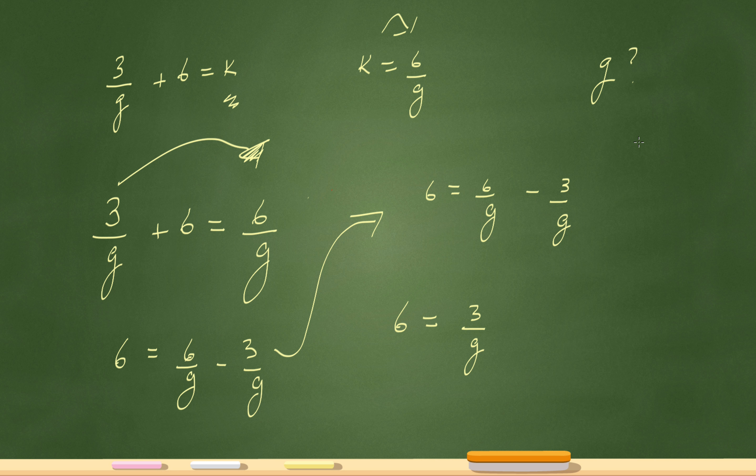So if I have a common denominator, like for example let's take it over 5: 3 over 5 minus 1 over 5. Since I have the same denominator, I can just leave the denominator the same and I'll just subtract my numerators. 3 minus 1 is 2. That's exactly what I did over here. 6 minus 3 is just 3, and since the denominator is g, that'll just stay. So I have 6 equals 3 over g.